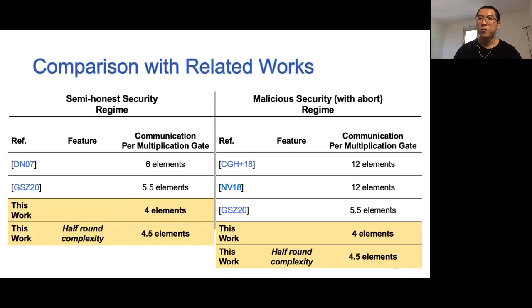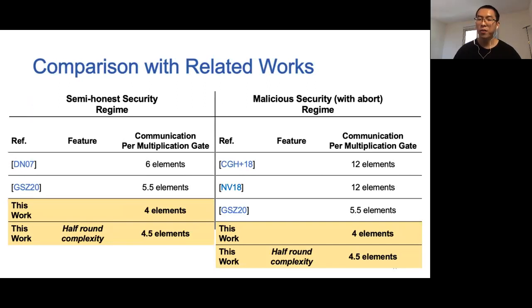In the semi-honest regime, the well-known DM protocol requires six elements per multiplication gate per party. Recently, the work of Goya and others proposed a marginal improvement and achieved 5.5 elements per multiplication gate per party. Both of our constructions achieve better communication complexity compared with these two works. In addition, our second protocol enjoys the feature that round complexity is reduced by a factor of two.